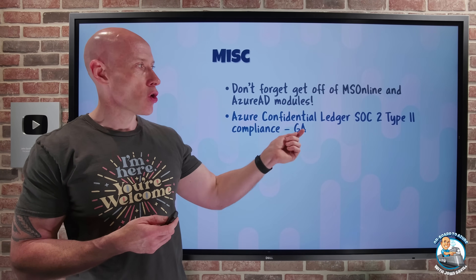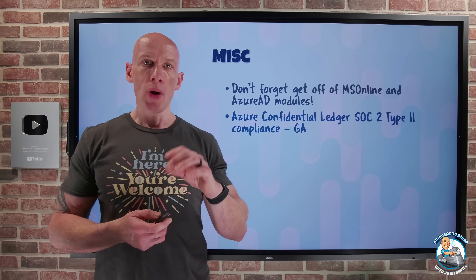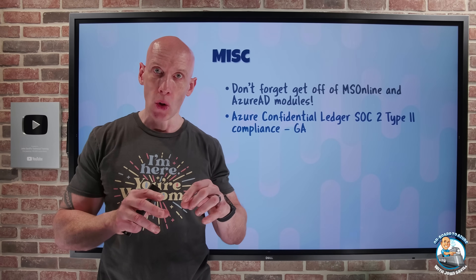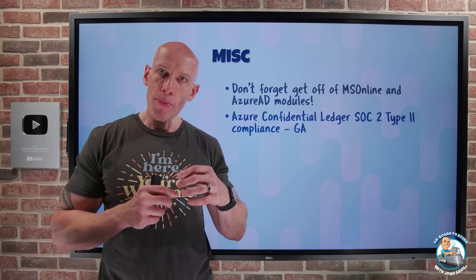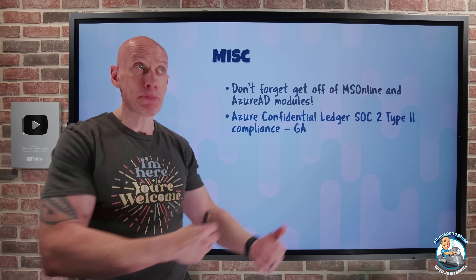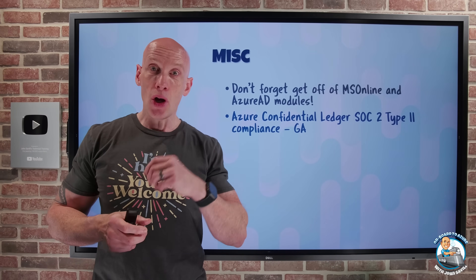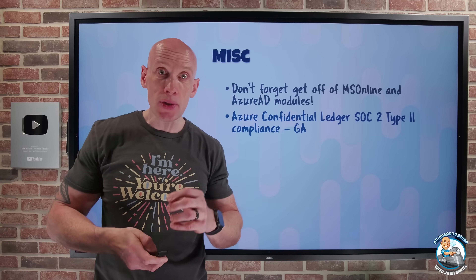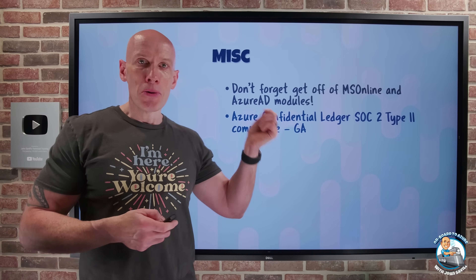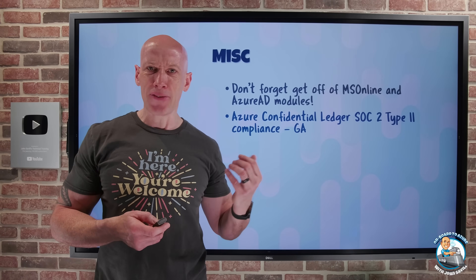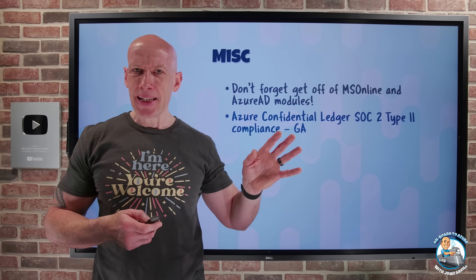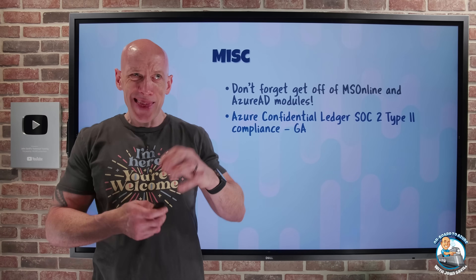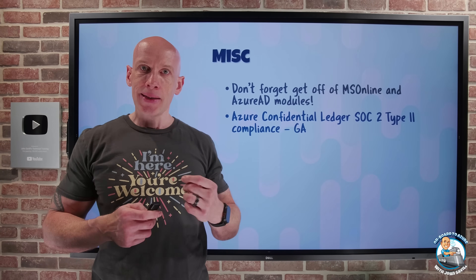Azure Confidential Ledger now has SOC 2 Type 2 compliance. The Confidential Ledger is built on blockchain, which provides a tamper-proof unstructured data store backed by cryptographically verifiable evidence for every transaction committed against it. It also runs in a trusted execution environment, giving you guaranteed data integrity with encryption at rest, encryption in transit, and encryption in use. The SOC 2 Type 2 certification is a rigorous standard for data security, availability, processing integrity, privacy, and confidentiality — showing that Azure Confidential Ledger has implemented the most robust controls and processes to protect customer data.